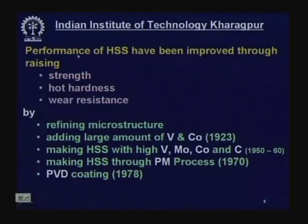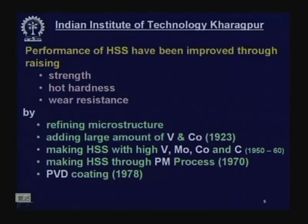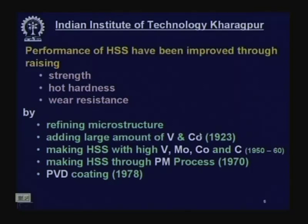Performance of high speed steel has been improved by raising mechanical strength — tensile strength, bending strength — and hot hardness for improved tool life, allowing use at higher speeds. This is achieved by refining the microstructure, and by adding large amounts of vanadium (5–12%) for wear and heat resistance, and cobalt for hot hardness so that hardness is retained even at 400–500°C.